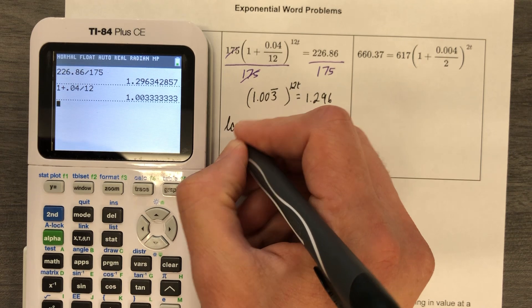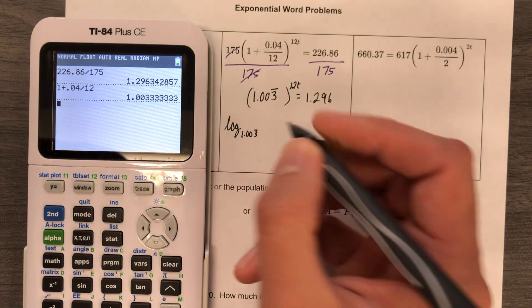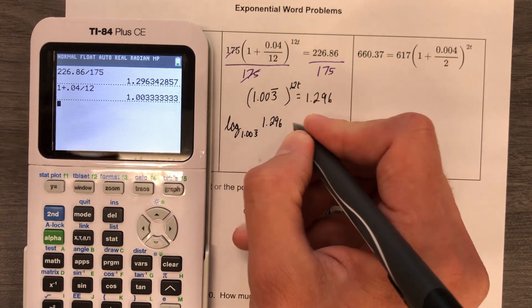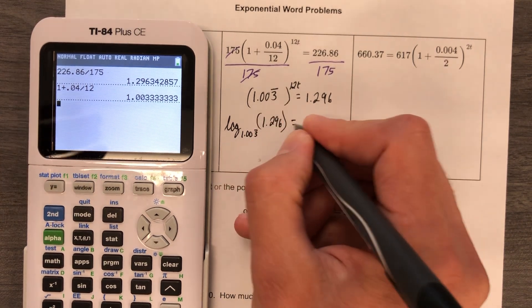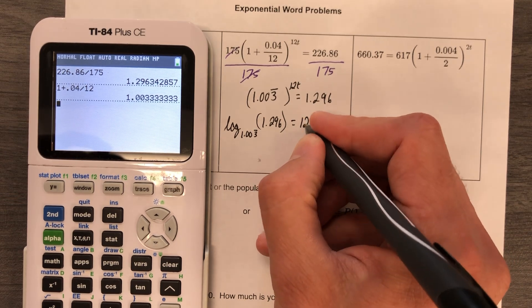We are now in exponential form. Turn it to a log. Log base 1.003 repeating of 1.296, and there is more, equals, parentheses there just because, 12t.